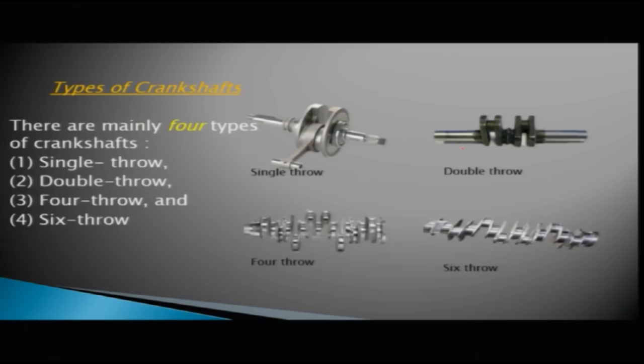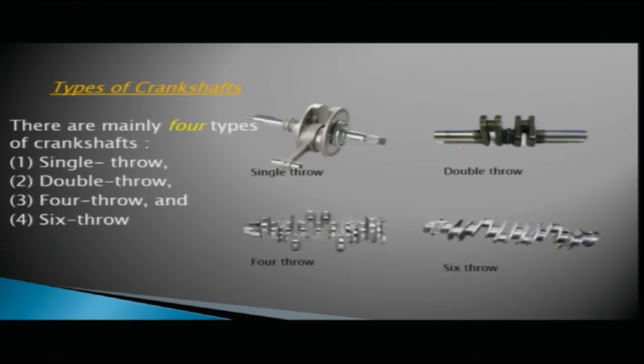Coming to types of crankshafts — there are mainly four types: single throw, double throw, four throw, and six throw crankshafts, as shown in the diagram.